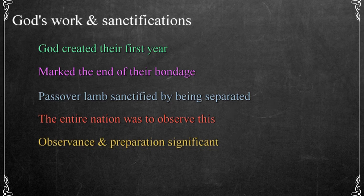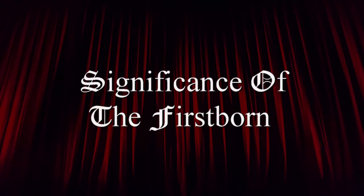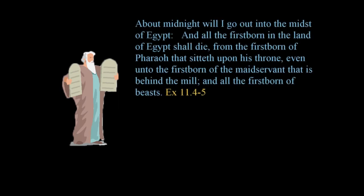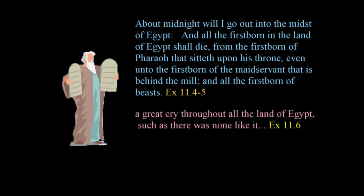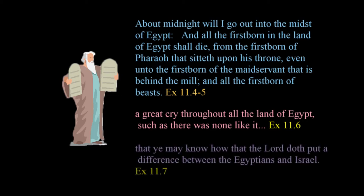Along with the selection of the Passover lamb, we read of another sanctification forming a link with both the Passover lamb and the nature of the final plague. The tenth plague God brought on Egypt was the death of the firstborn. The Lord told Moses, About midnight will I go out into the midst of Egypt, and all the firstborn in the land of Egypt shall die, from the firstborn of Pharaoh that sitteth upon his throne, even unto the firstborn of the maidservant that is behind the mill, and all the firstborn of beasts, in Exodus 11:4-5. The plague would let them know that the Lord doth put a difference between the Egyptians and Israel, in Exodus 11:7.